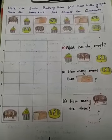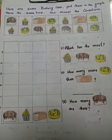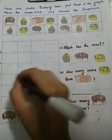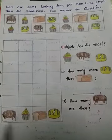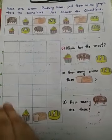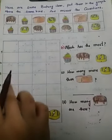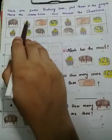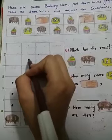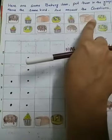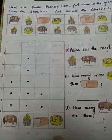There are some bakery items. Put these bakery items in the graph above the same kind and answer the questions. I am going to make a dot in the blocks — you must do colors. How many cakes are there? One, two, three — color three blocks. How many cupcakes? One, two, three, four, five — color five blocks. How many breads? One, two — always start from the first block.